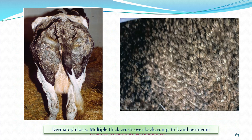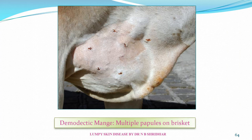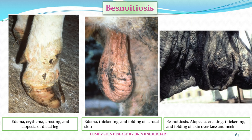Dermatophilosis shows crust lesions over the back, rump, tail, and perineum. Demodectic mange usually focuses on the brisket region with multiple papules. Besnoitiosis presents with edema, erythema, crusting, and alopecia of the distal legs, and thickening and folding of the scrotal skin. Alopecia areata may also be present.